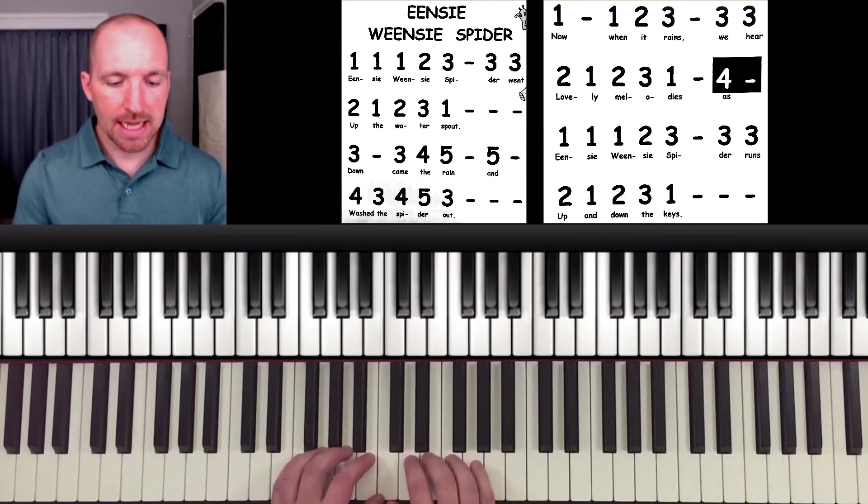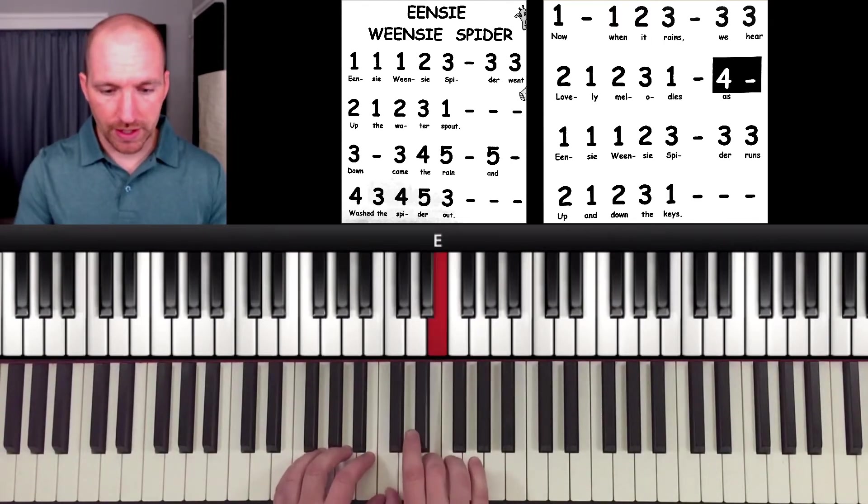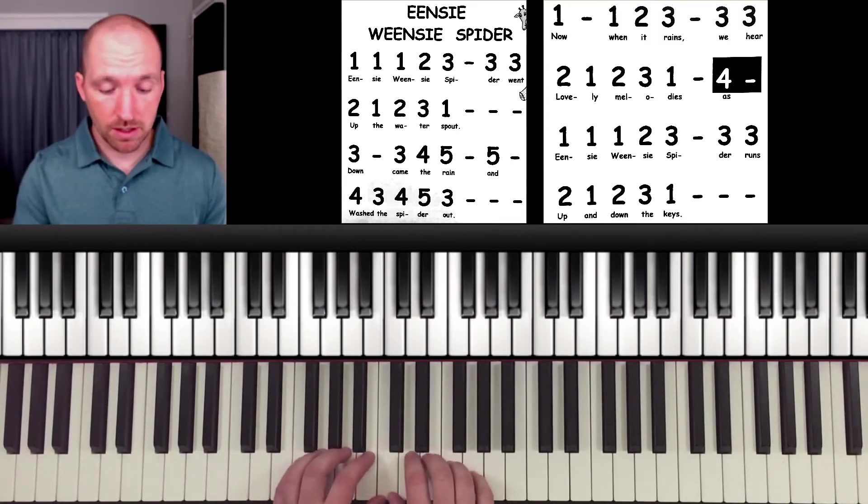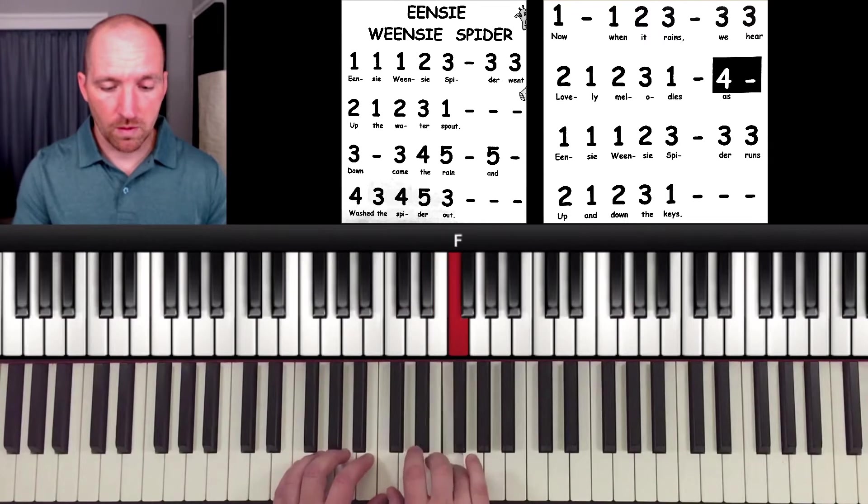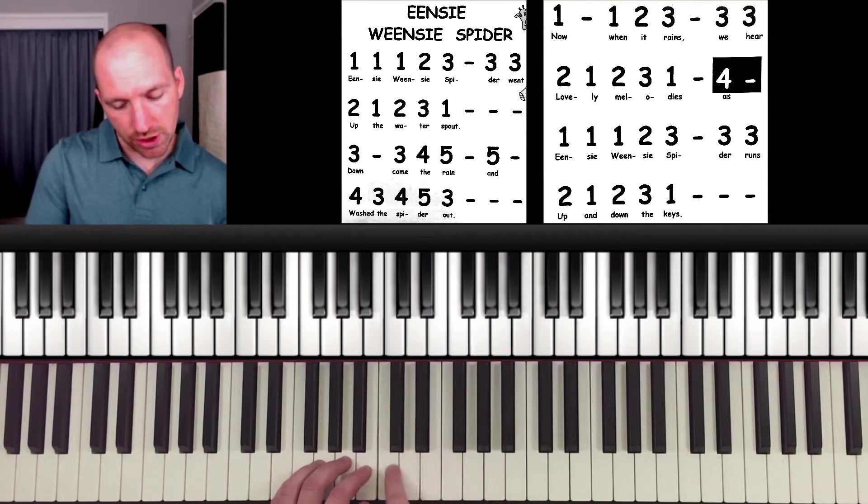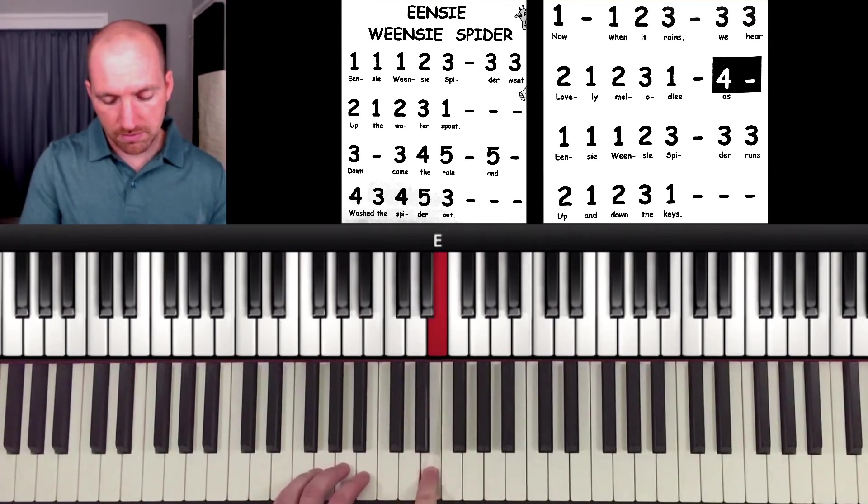Down came the rain. Three, hold. Three, four, five, hold. Five, hold. And then the last line. Wash the spider out. Four, three, four, five, three. Now make sure you're still in that C position, so you're not playing like this.